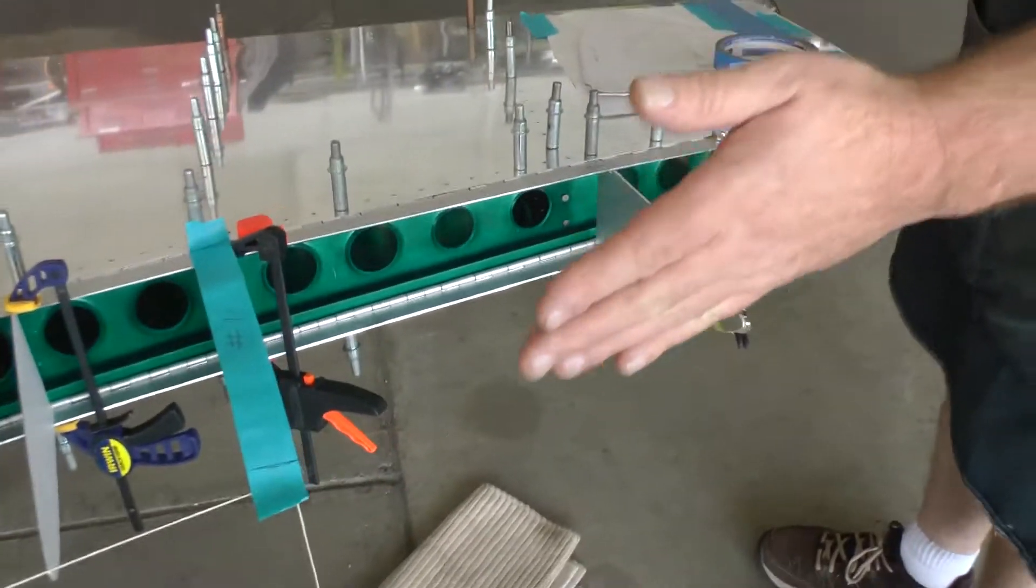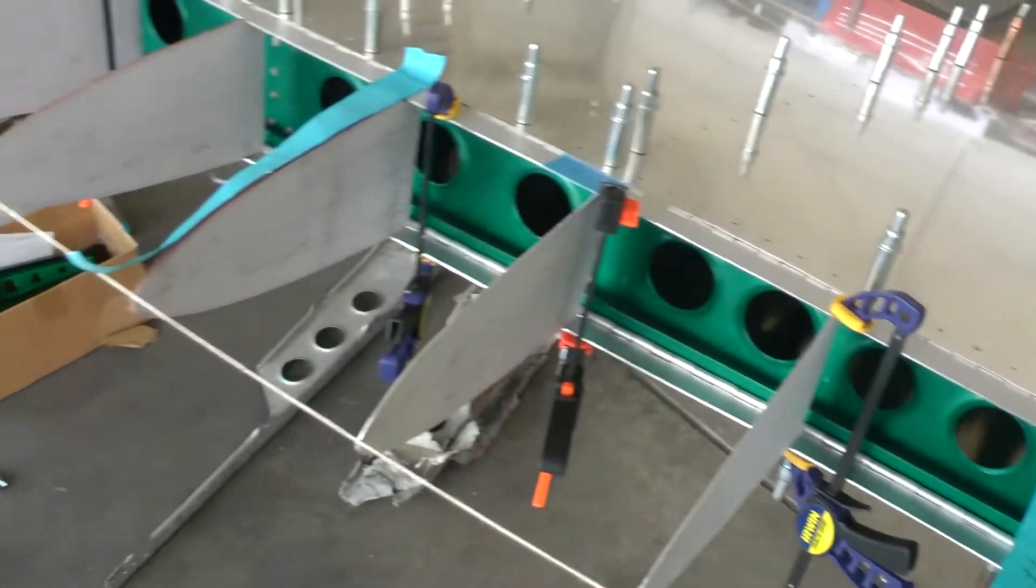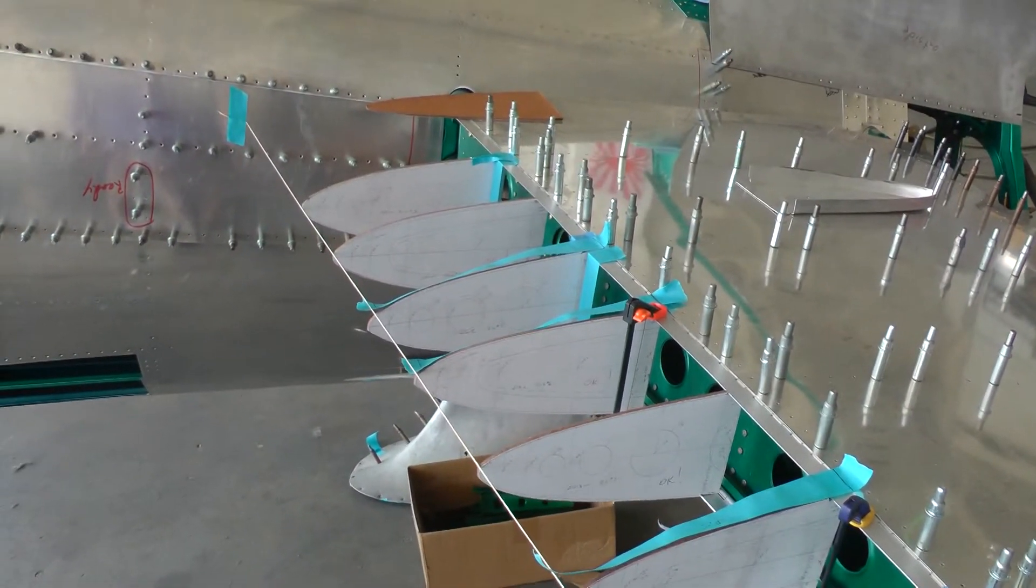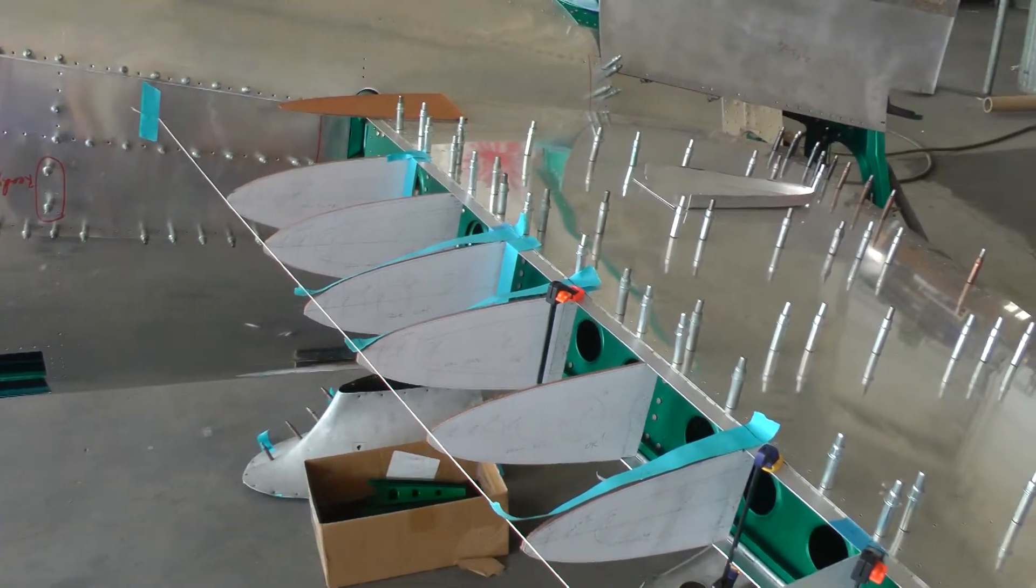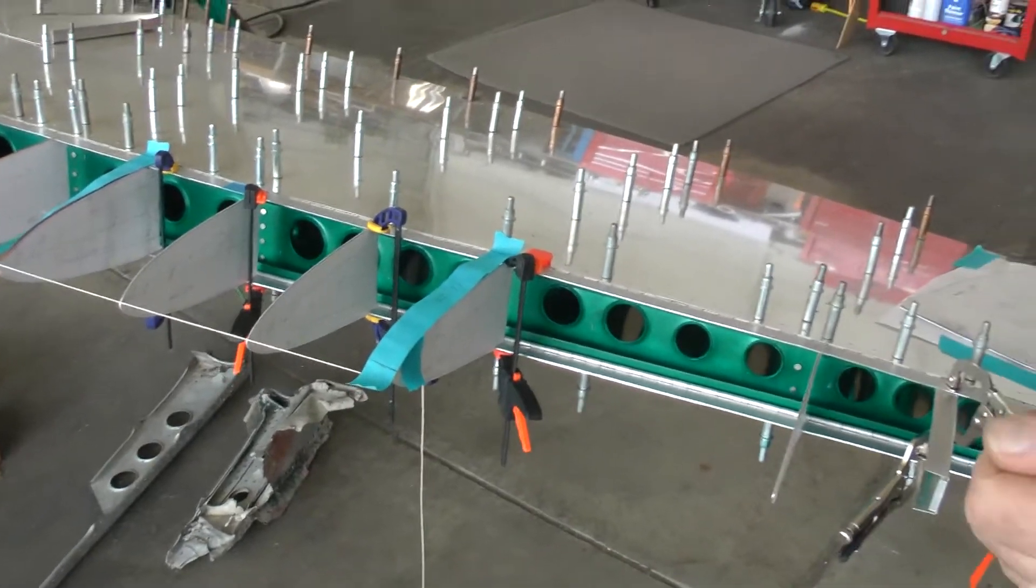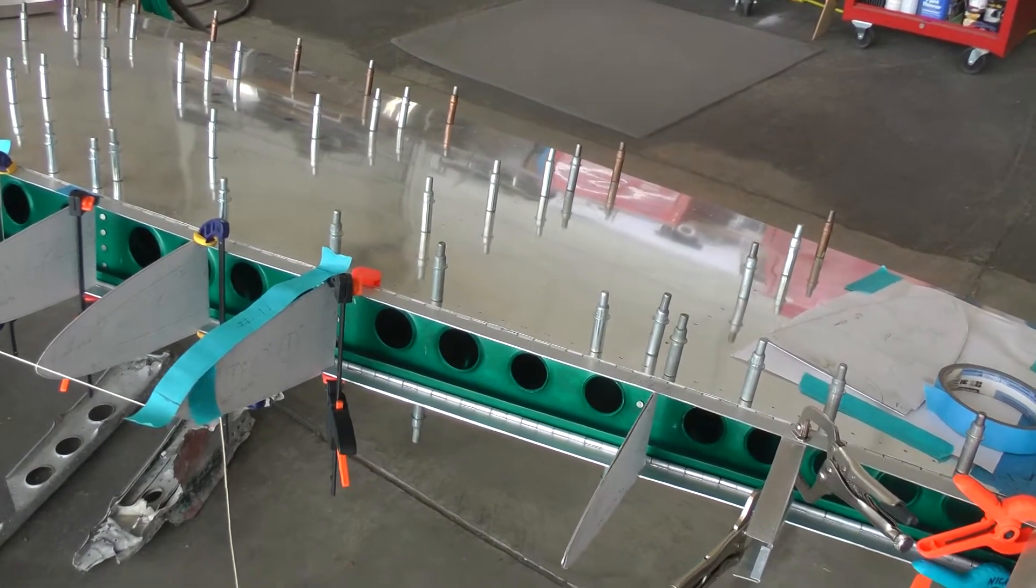So what we do is we make templates for the ribs, make sure everything jives. Basically build the thing as a mock-up first because it can get rather frustrating where you build something, you get it right, you put it on there, and then you go to your next piece like a fairing or whatever and go to put it on and it just doesn't work. You have to build a mock-up.